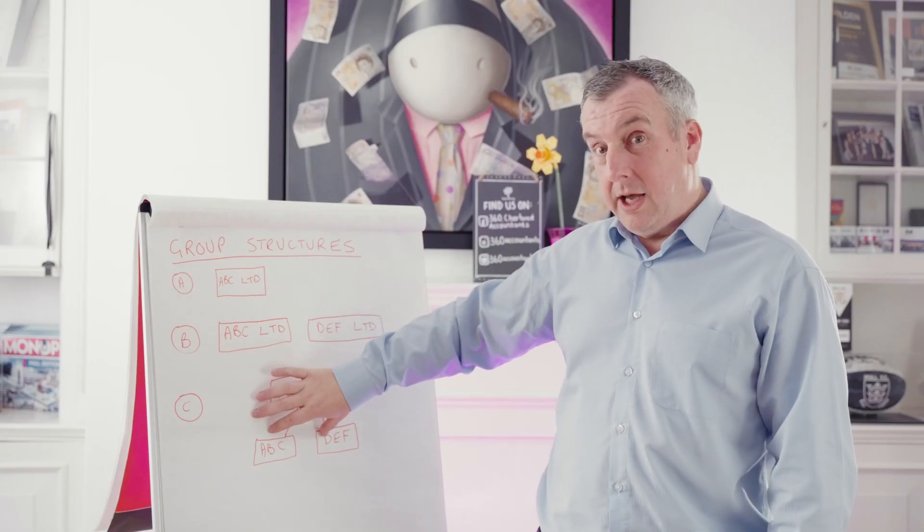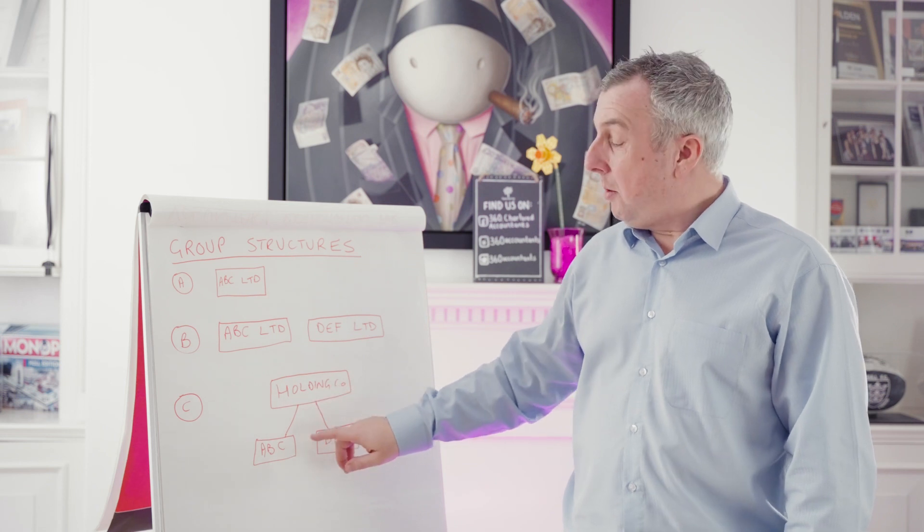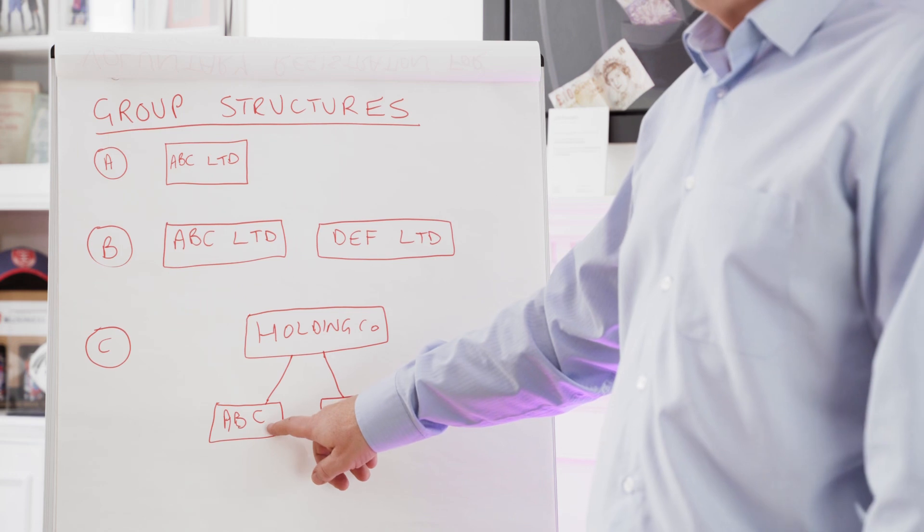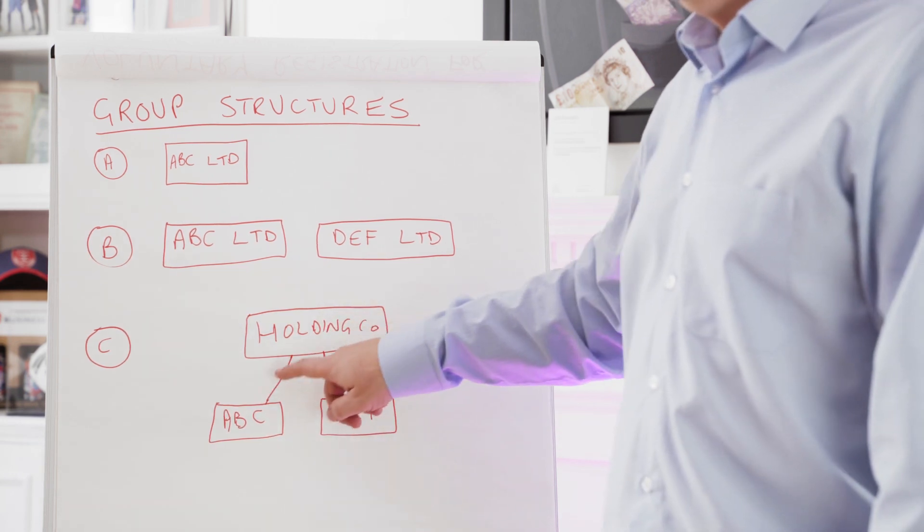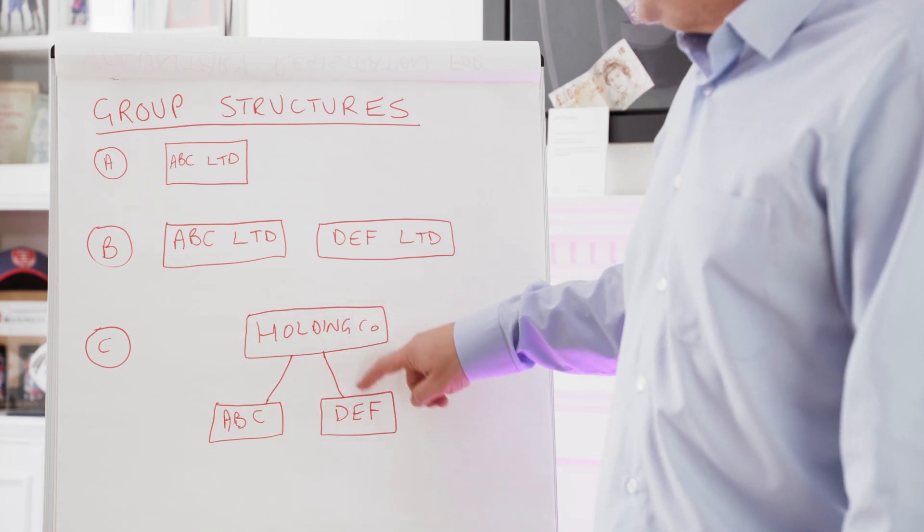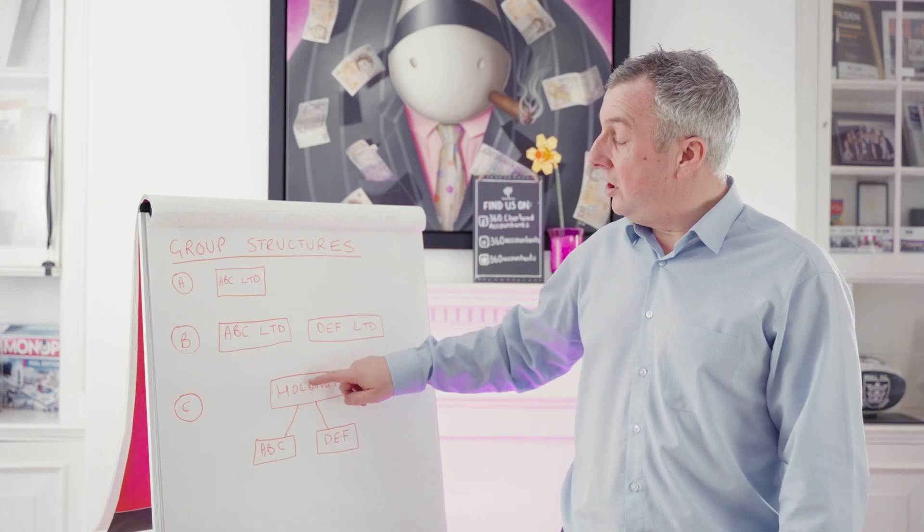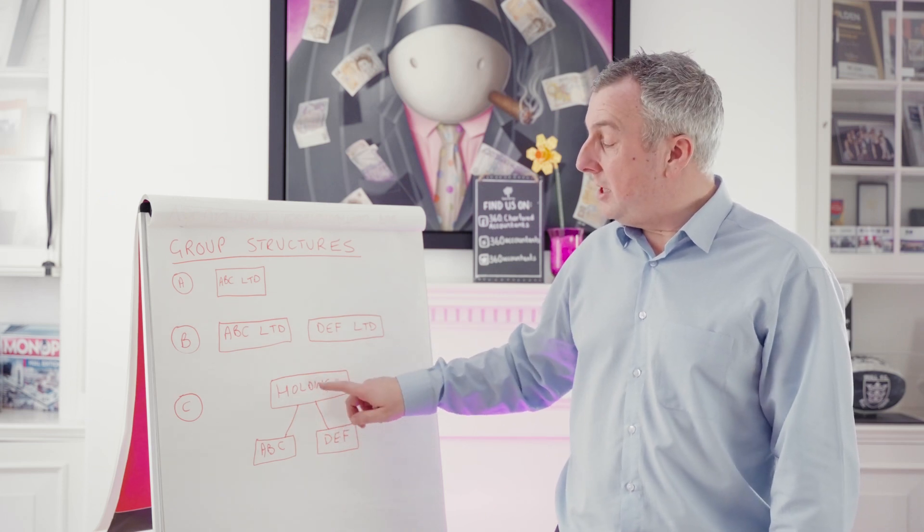Scenario C on this example is an actual group structure. And what you do in this scenario is you have the two trading companies underneath a holding company. The holding company owns the shares in ABC, it also owns the shares in DEF, and the business owners actually own the shares in Holding Co. rather than the two trading companies.